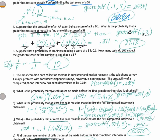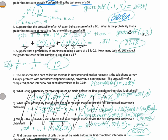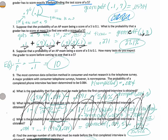Number 8: how many tests do you expect the grader to score before getting one? That's 1 over P. These other answers were different because they were different questions.